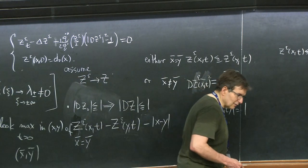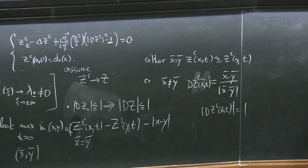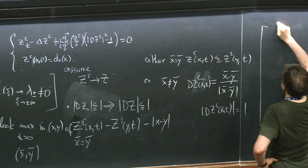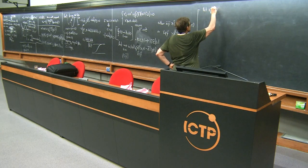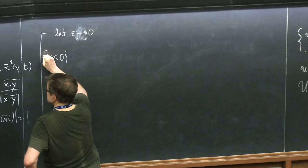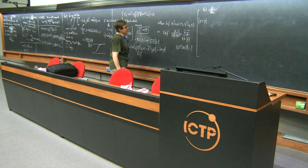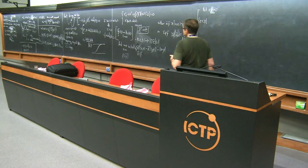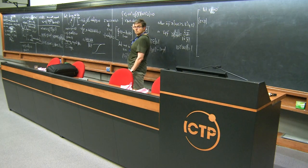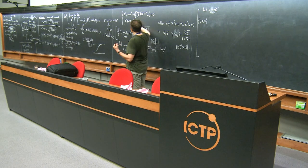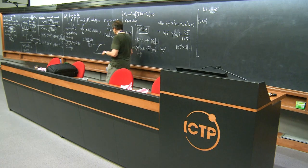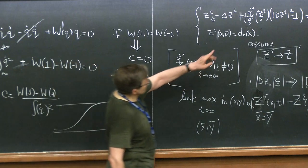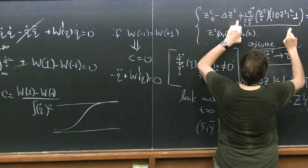Once I have this bound, I'm home free. I let epsilon go to zero and look at the set where z is negative. If the limit is negative, that means z epsilon for small epsilon is negative somewhere, which means this quantity is negative. This quantity is positive at minus infinity and it's multiplied by a minus, so: negative, negative, positive. We know it's negative and it's positive for small epsilon. That means I have this inequality: if this is positive, this has to be negative.